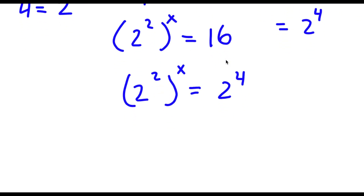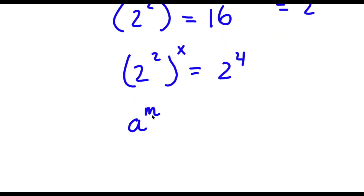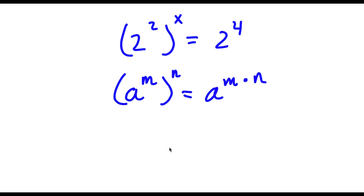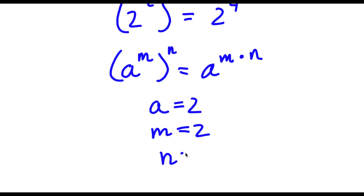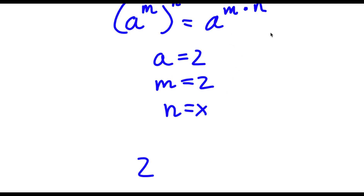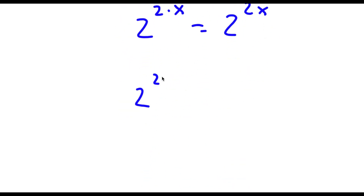Now, if I have something in the form a to the power of m to the power of n, this is the same thing as a to the power of m times n. So for 2 squared to the power of x, a is 2, m is 2, and n is x. This gives 2 to the power of 2 times x, which is 2 to the power of 2x. So now I have 2 to the power of 2x is equal to 2 to the power of 4.